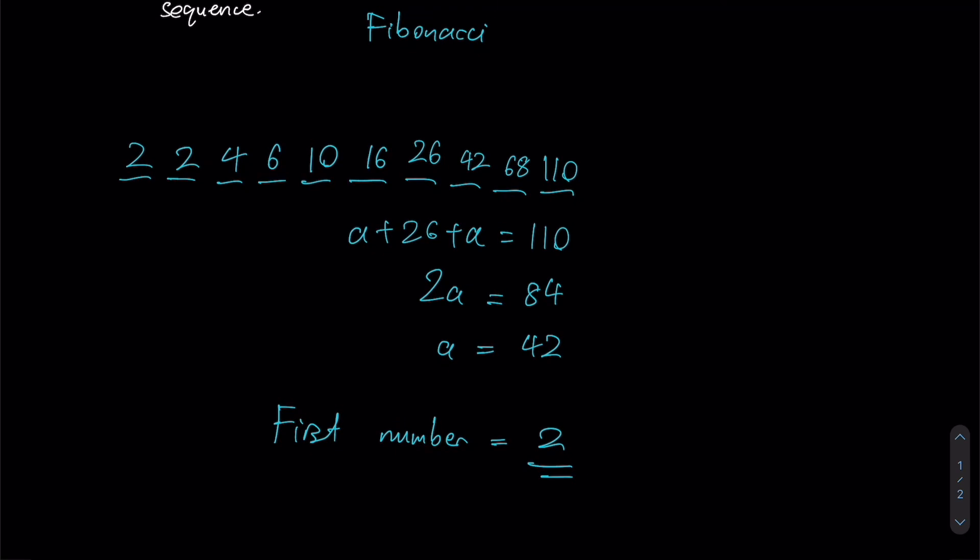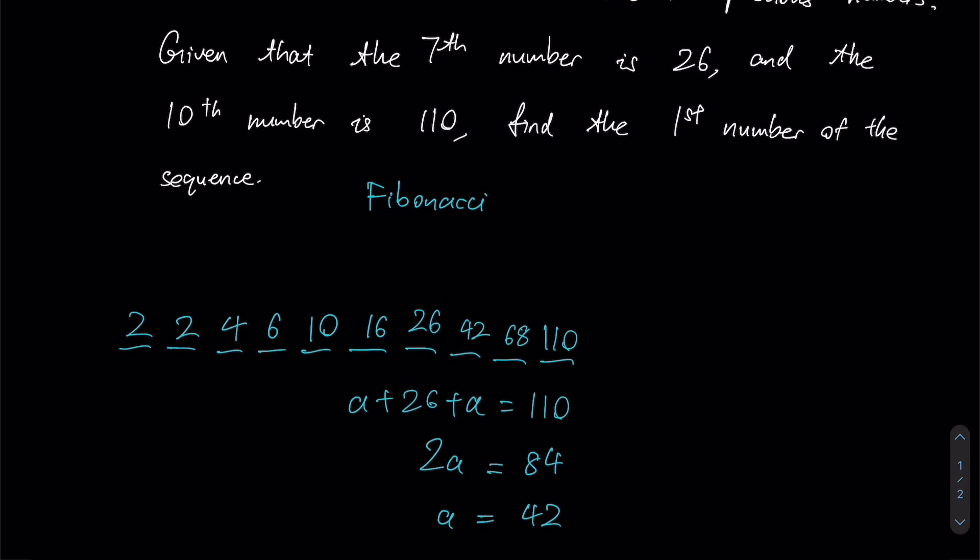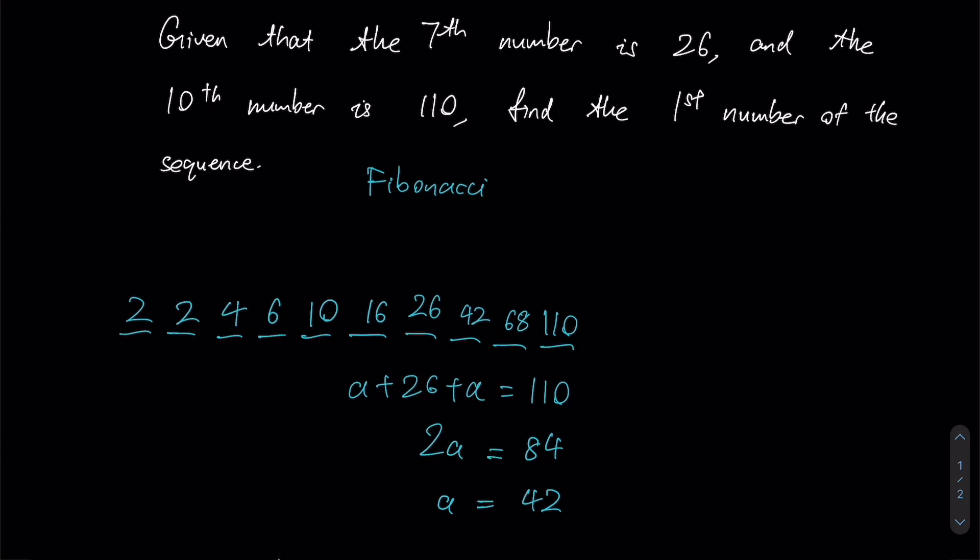Again from the top: first thing we notice is that the question presents us with a Fibonacci sequence, and we were initially only given these two values. Since we have two blanks in the middle that we don't exactly know the value of, we let them be a as well as a plus 26, such that we can construct this equation, proceed to find the value of a, and afterwards it is simply a matter of working backwards all the way towards our very first number of the sequence.